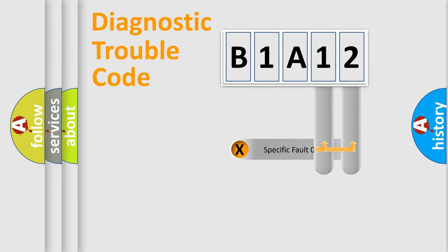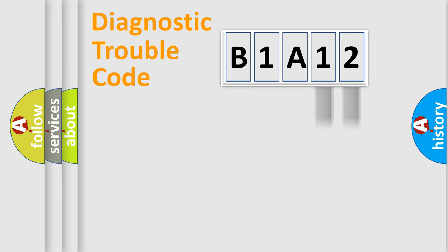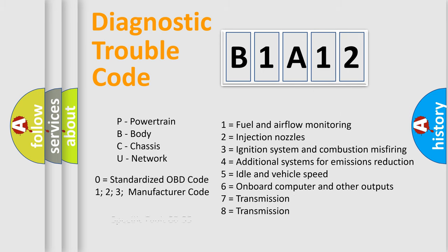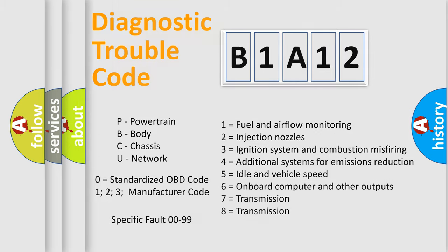Only the last two characters define the specific fault of the group. Let's not forget that such a division is valid only if the second character code is expressed by the number zero.